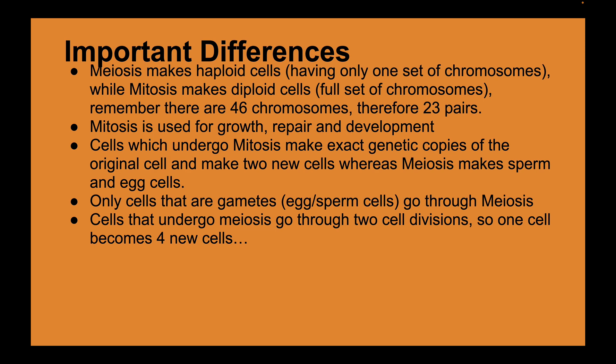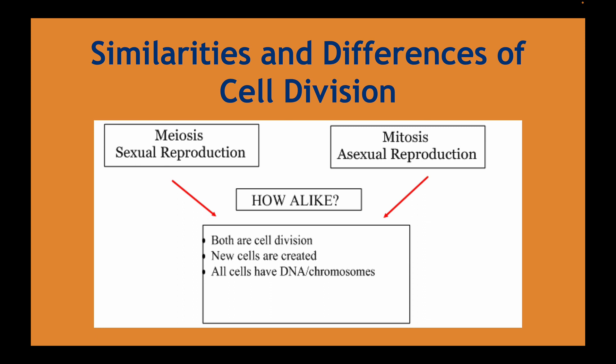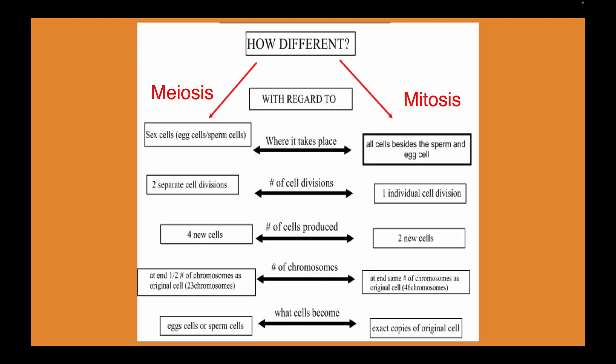Here's a graphic organizer connecting similarities and differences. Meiosis (sexual reproduction) and mitosis (asexual reproduction) are alike in that both involve cell division, new cells are created in both processes, and all resulting cells contain DNA and chromosomes. As for differences, meiosis takes place primarily in the gonads, while mitosis happens everywhere else in the body — hands, feet, muscles, bones, liver, and so on.